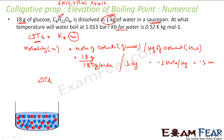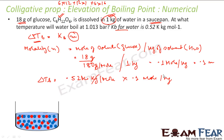Now we can easily find delta T_b. It is K_b × m = 0.52 K·kg/mol × 0.1 mol/kg. The moles cancel, giving delta T_b = 0.052 K. The increase in boiling point is 0.052 K.